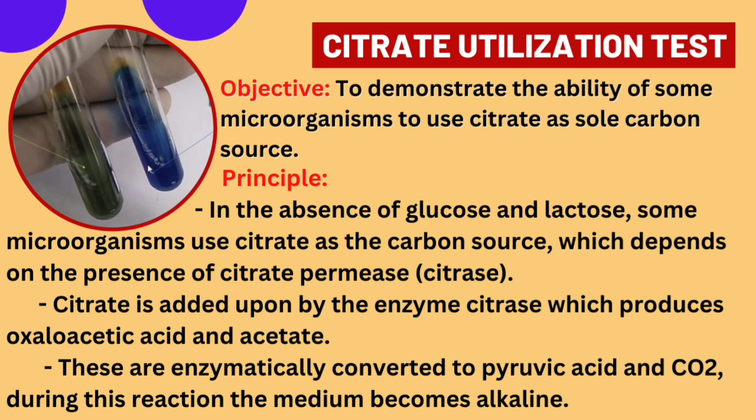The citrate enzyme acts on citrate as the carbon source for growth. This citrate enzyme converts citrate into oxaloacetic acid and acetate. This reaction then produces pyruvic acid and carbon dioxide through enzymatic conversion.